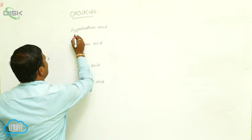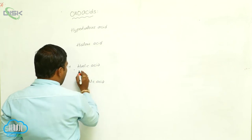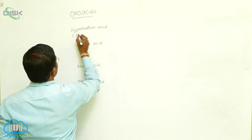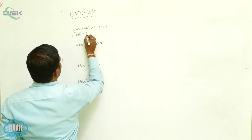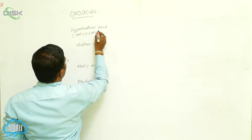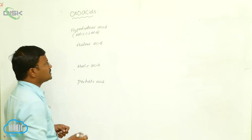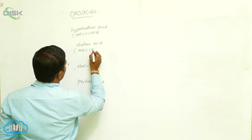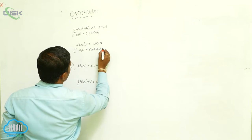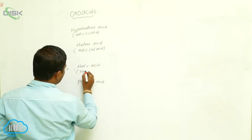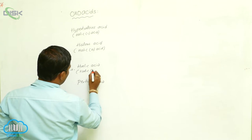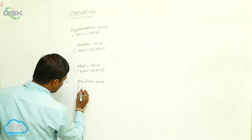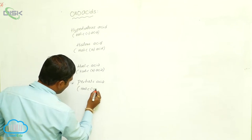The four types of oxoacids are: hypohalous acid (also called halic-1 acid), halous acid (halic-3 acid), halic acid (halic-5 acid), and perhalic acid (halic-7 acid).